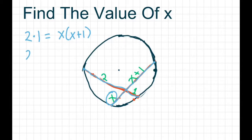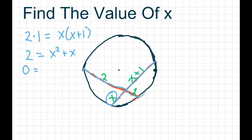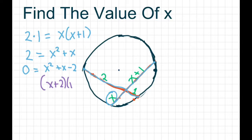And then we're going to solve. So we get 2 equals X squared plus X. Since we have quadratic form here, I'm going to move the 2 over, so you get 0 equals X squared plus X minus 2, subtracting the 2 from both sides. Now this is factorable, so we're going to have X plus 2 times X minus 1.